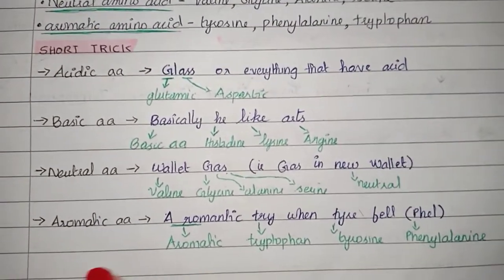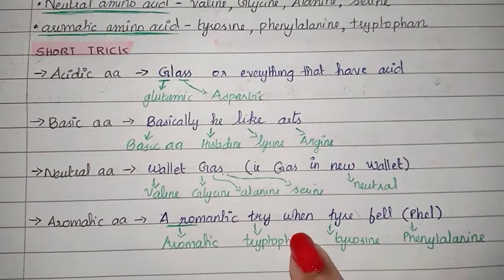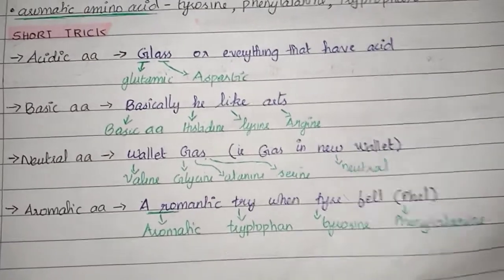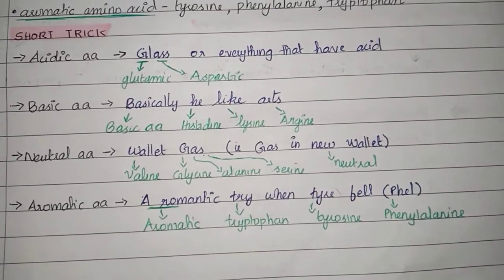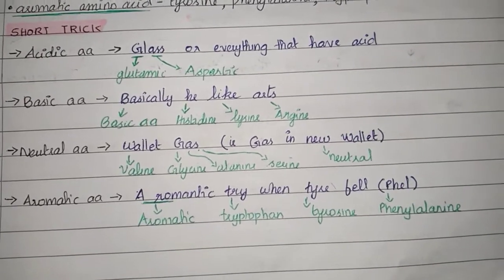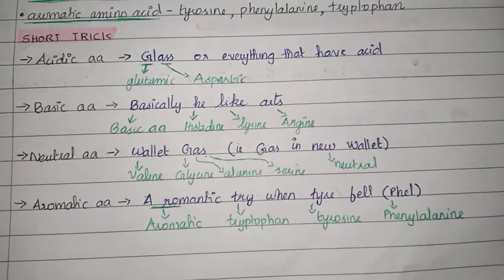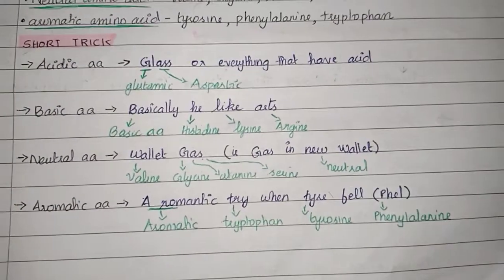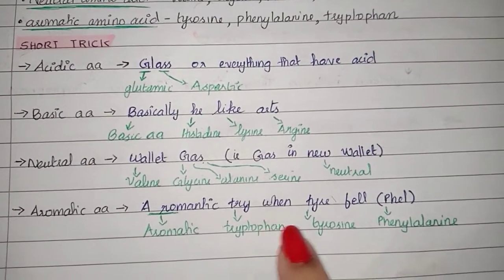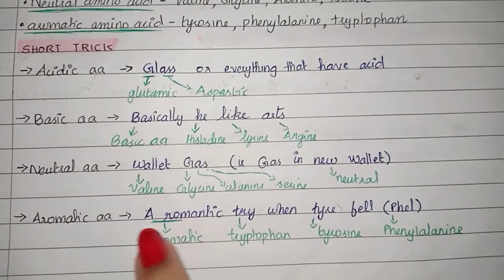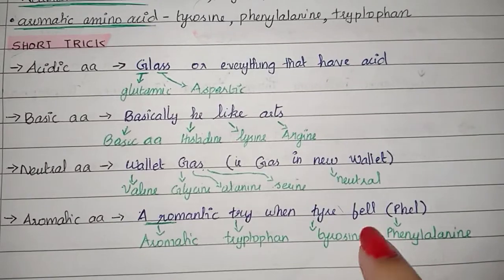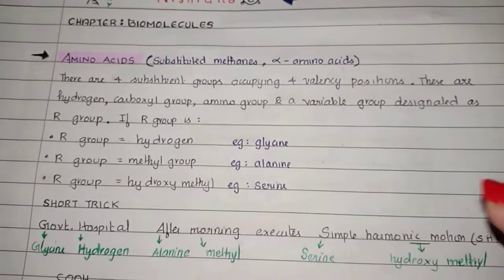For aromatic amino acid, the trick is: 'a romantic try when tire fell.' A guy was trying to do something romantic on his cycle, but the tire fell down. A romantic for aromatic, try for tryptophan, tire for tyrosine, and fell for phenylalanine. That's the short trick for amino acids.